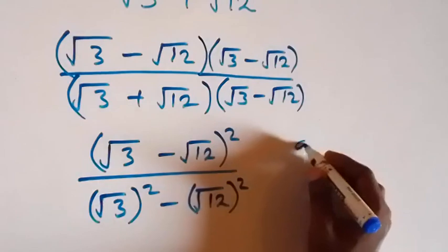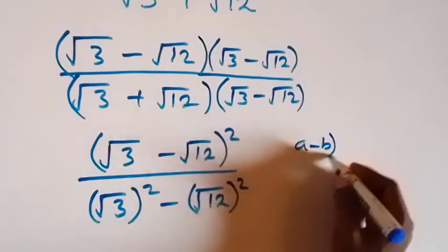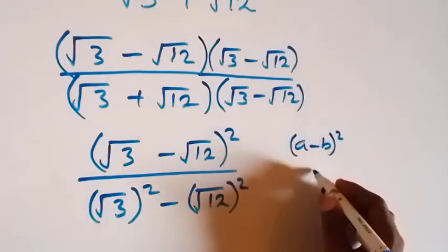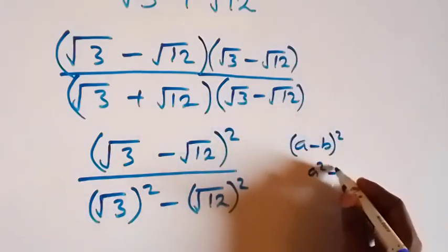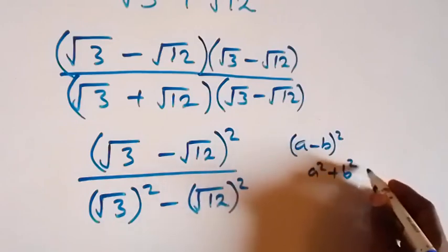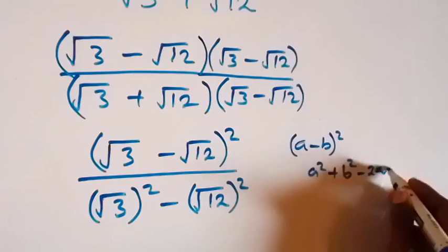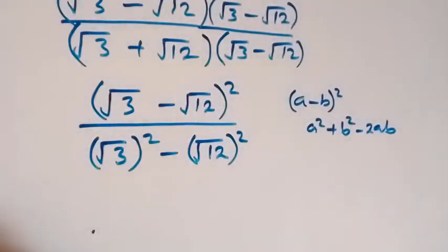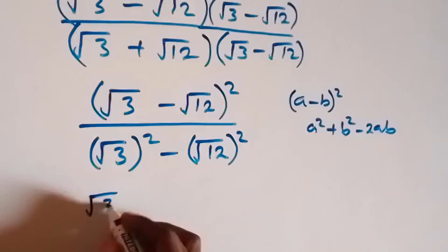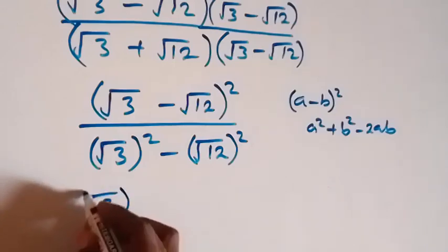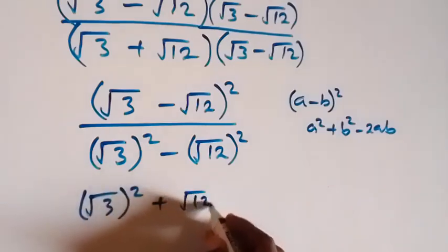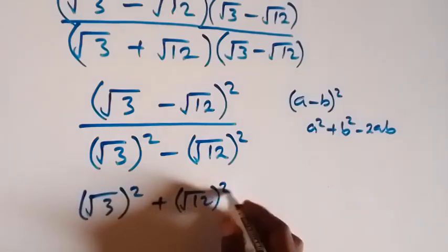From here, what we have up here from the expansion (a minus b) all squared will give us a² plus b² minus 2ab. So this gives us (√3)² plus (√12)² minus 2 times √3 times √12.